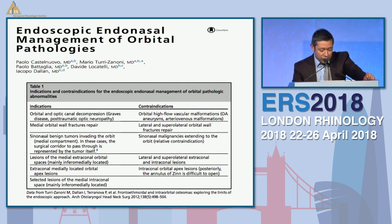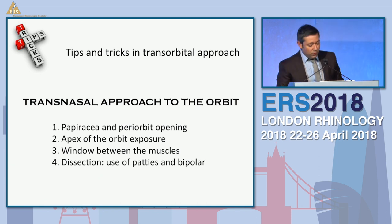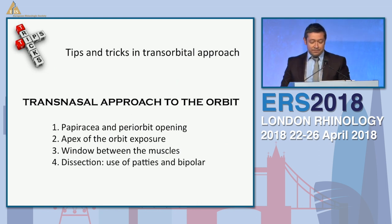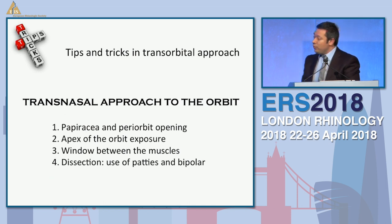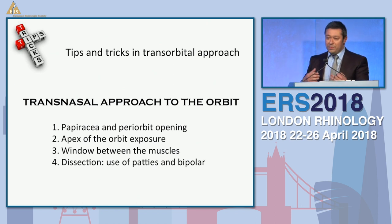These are the pathologies you can treat, but I will focus the topic on intraorbital lesions. When you are dealing with pathology inside the orbit, you always have to keep these four tips in mind. Before all, if you are looking at the pathology through the nose, you have to open the papyracea to expose the periorbit.